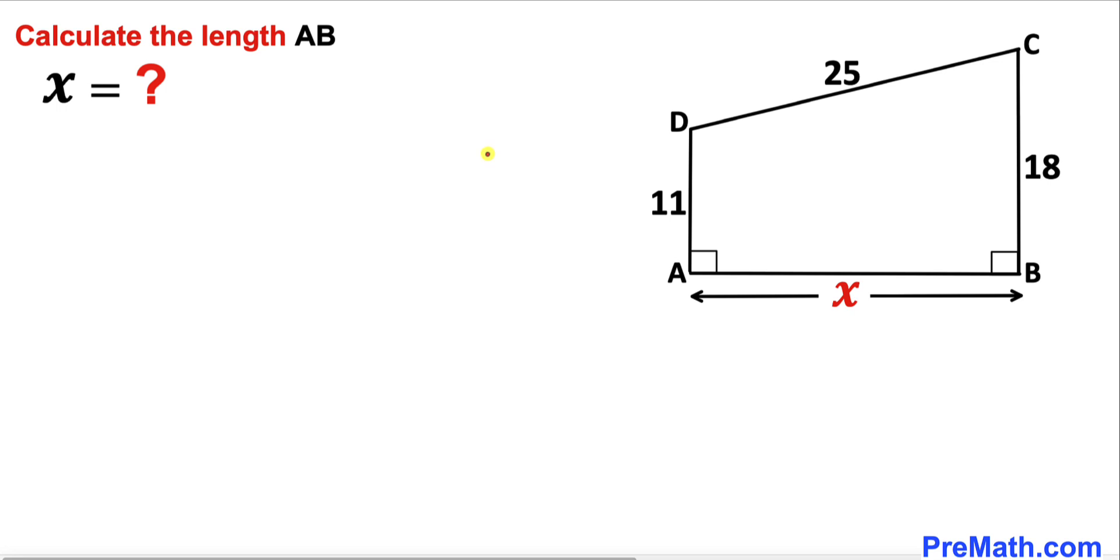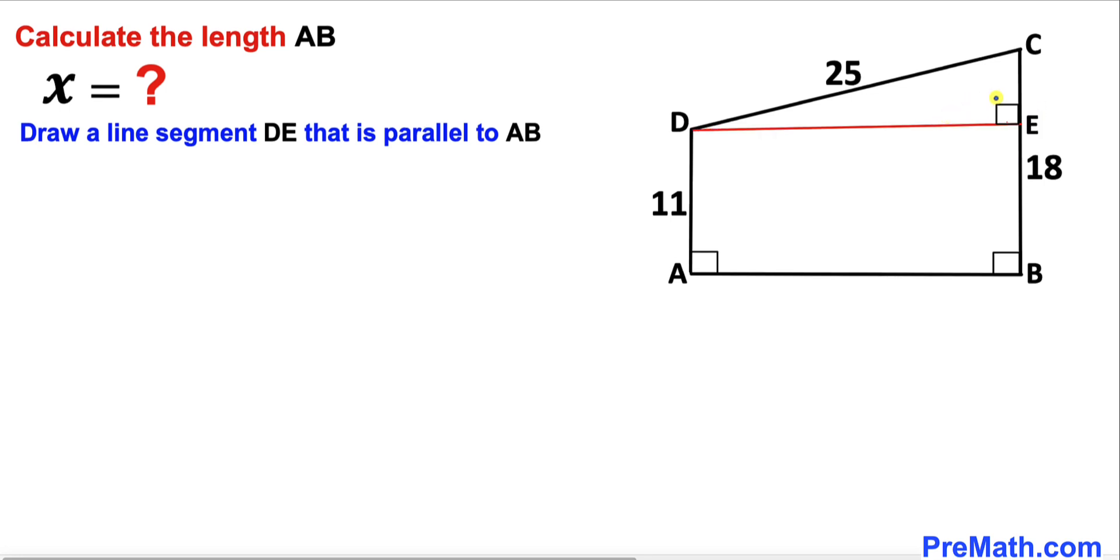Let's get started. Here's the very first thing we are going to do. Let's draw a line segment DE that is parallel to AB. Let's go ahead and draw this line segment DE where E is some point over here. And here's our much nicer looking diagram. We can see that this triangle DEC is a right triangle since this angle is 90 degrees.